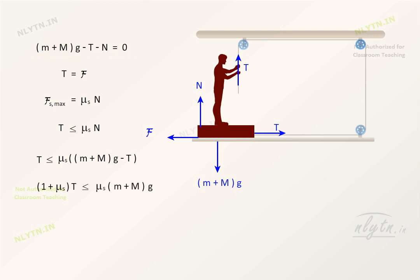Therefore, (1 + μₛ)T should be less than or equal to μₛ(m + M)g.